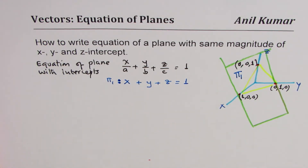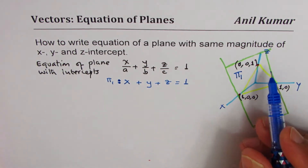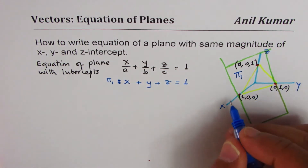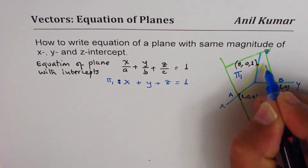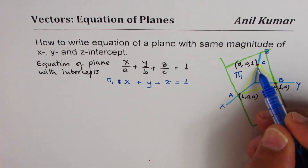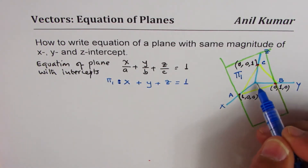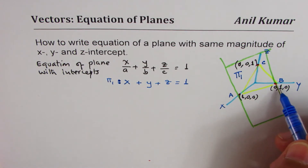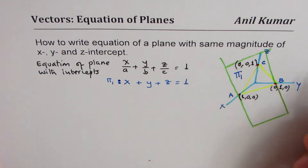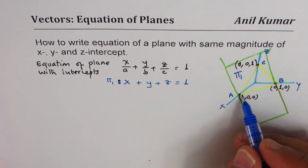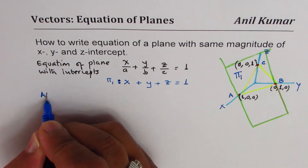So it's as simple as that — given the intercepts you can easily find the equation using the intercept form. For those who have not been taught this formula, we'll follow a different method. We are given three points A, B, and C. We can find two direction vectors and cross multiply to get the normal, then use the third point to find the equation of the plane.